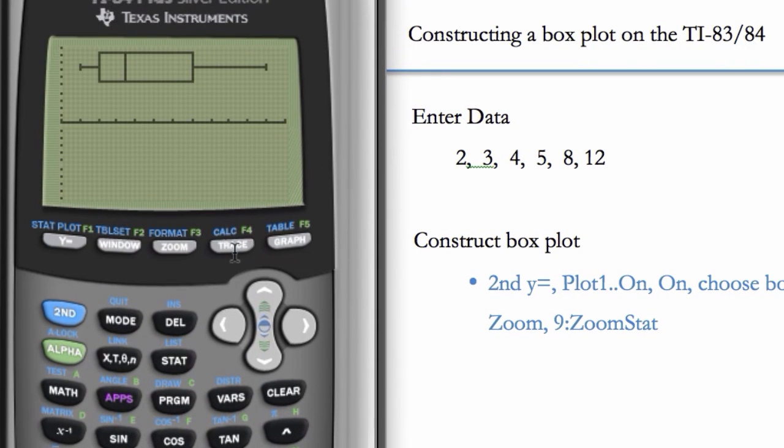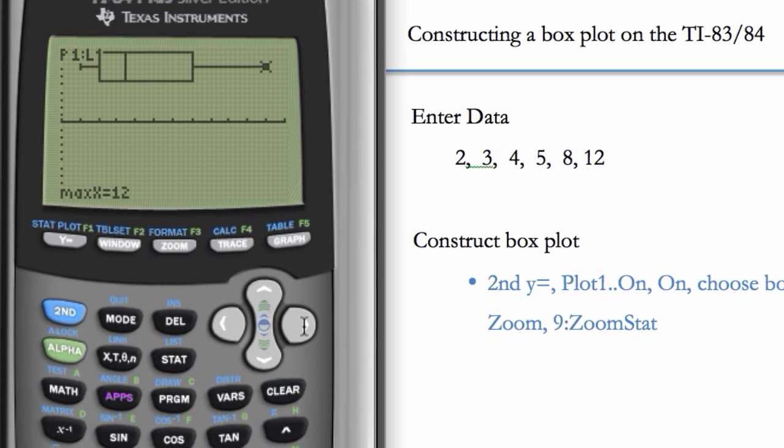So here, we can hit trace along the top. And we'll see our five-number summary. So our min is 2, hit the right arrow. Q1 is 3, which is what we expected. Median, 4.5. Q3, 8, hit the right arrow again. Max is 12.